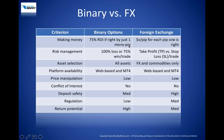In binary options, if you're right just by one micropip, you earn 75% ROI. On the flip side, when looking at risk management, if you are wrong in your binary options trade — let's say you bet a call position on euro/US dollar and lost it by just one micropip — you lose 100% of your wagered amount.